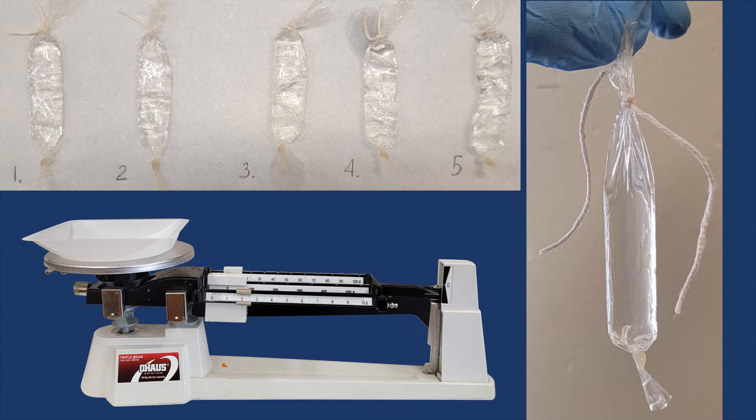In this experiment, we will explore the principles of osmosis by using dialysis bags as model cells. Dialysis bags are made of semi-permeable membrane that allows water molecules to pass through while restricting the movement of large solute molecules such as sucrose. By placing dialysis bags filled with different solutions into beakers containing various sucrose solutions, we can observe and measure the direction and extent of water movement due to osmosis.